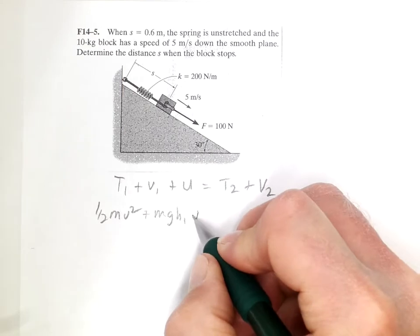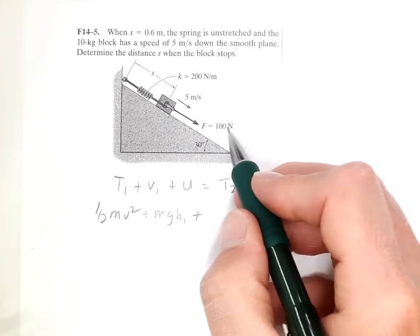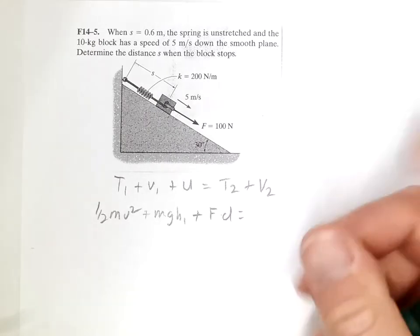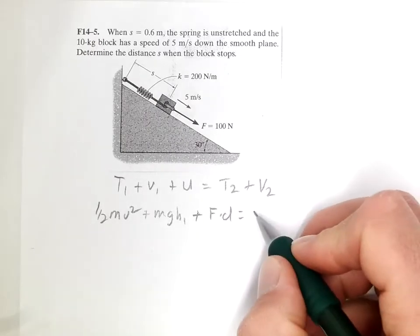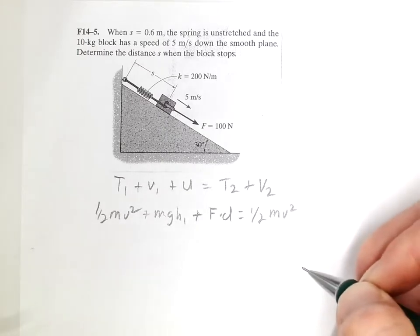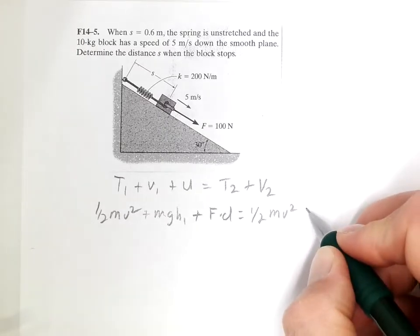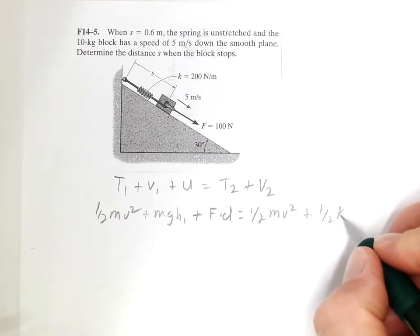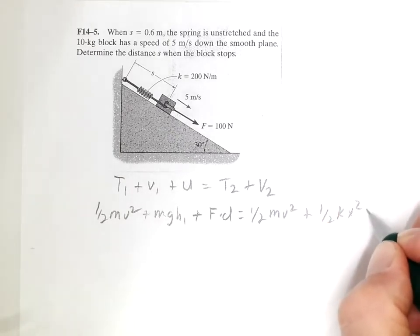Plus U, which is force times distance, and T2 is 1 half mv squared also. And the potential there is the stretch in the spring plus mgh.